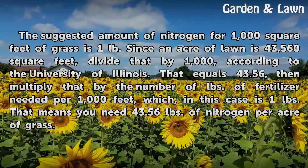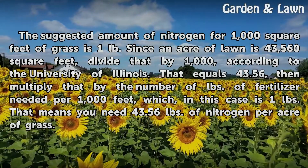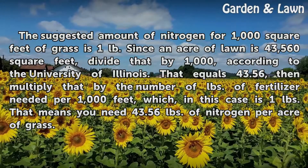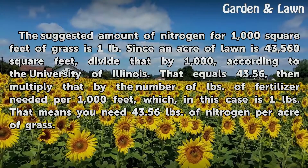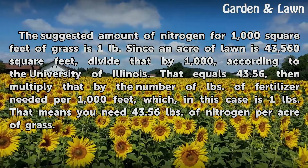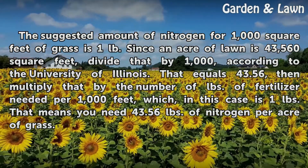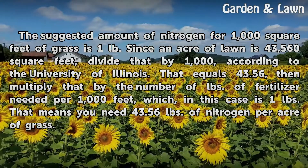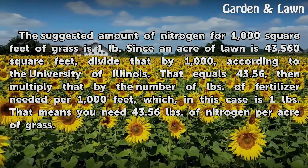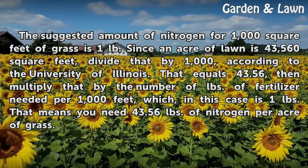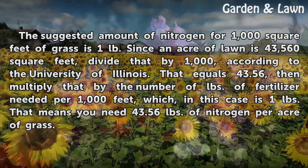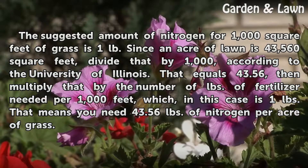The suggested amount of nitrogen for 1,000 square feet of grass is one pound. Since an acre of lawn is 43,560 square feet, divide that by 1,000 — according to the University of Illinois, that equals 43.56. Then multiply that by the number of pounds of fertilizer needed per 1,000 feet, which in this case is one pound. That means you need 43.56 pounds of nitrogen per acre of grass.